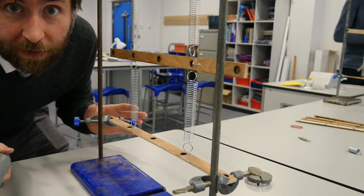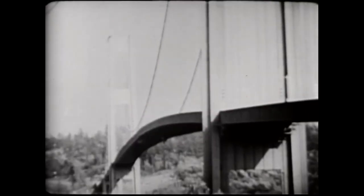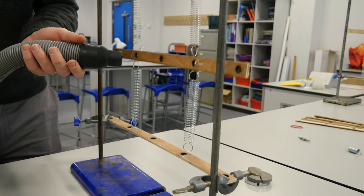So this is a model of Galloping Gertie, which is the Tacoma Narrows Bridge. This is an example of resonance. Galloping Gertie was the nickname for the bridge, and well, here you can see why.